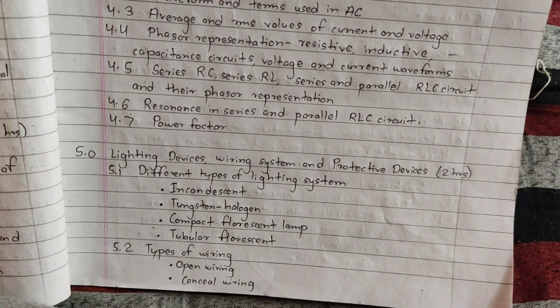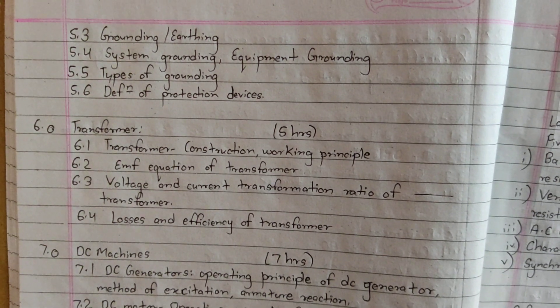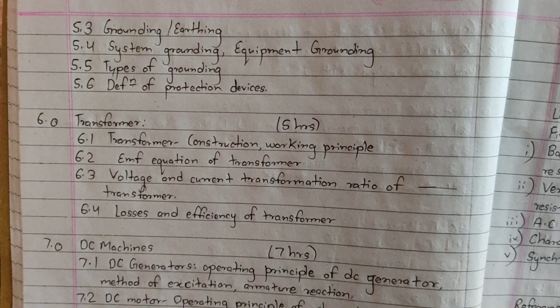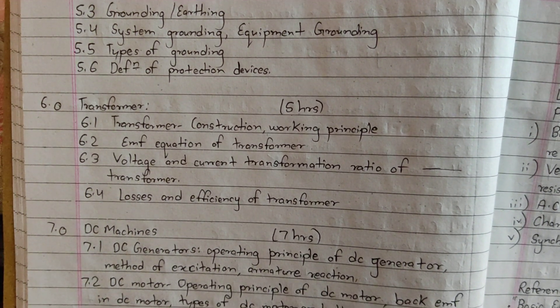Types of wiring: open wiring or concealed wiring. Grounding routing, system grounding, equipment grounding, types of grounding, definition of protective devices.